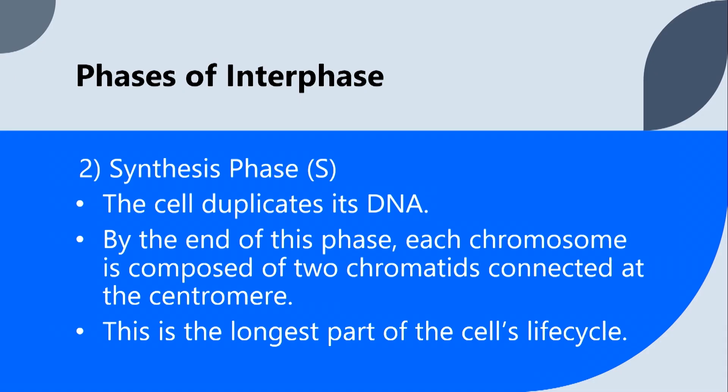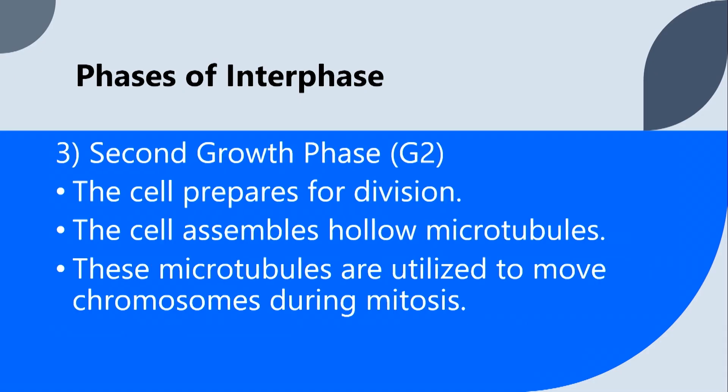By the end of this phase, each chromosome is composed of two chromatids connected at the centromere. And we'll talk a little bit more about some of those words in a later lesson. And like I said earlier, this is the longest part of the cell cycle, of the cell's life cycle, because it's very intricate to make sure the DNA is perfect.